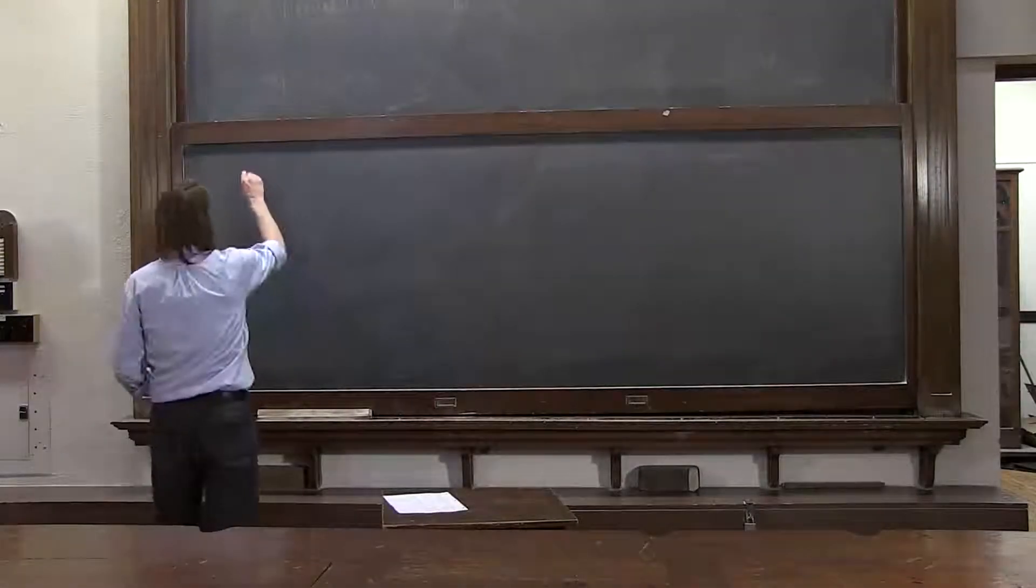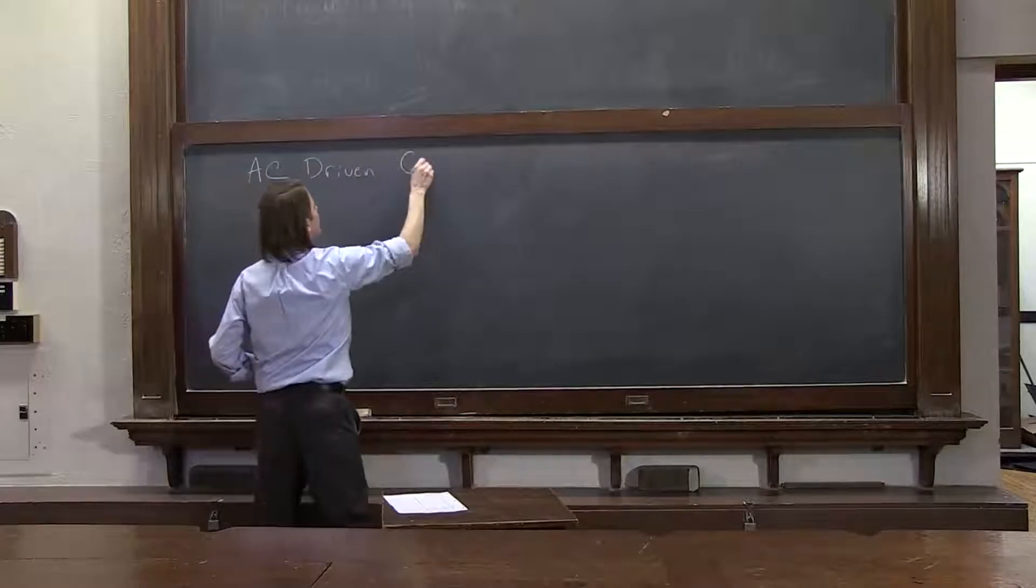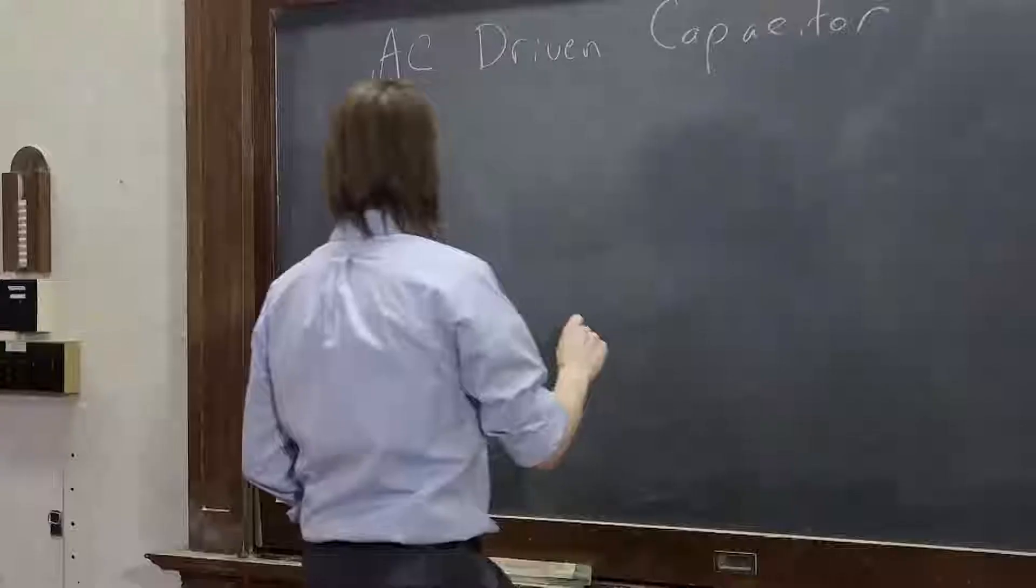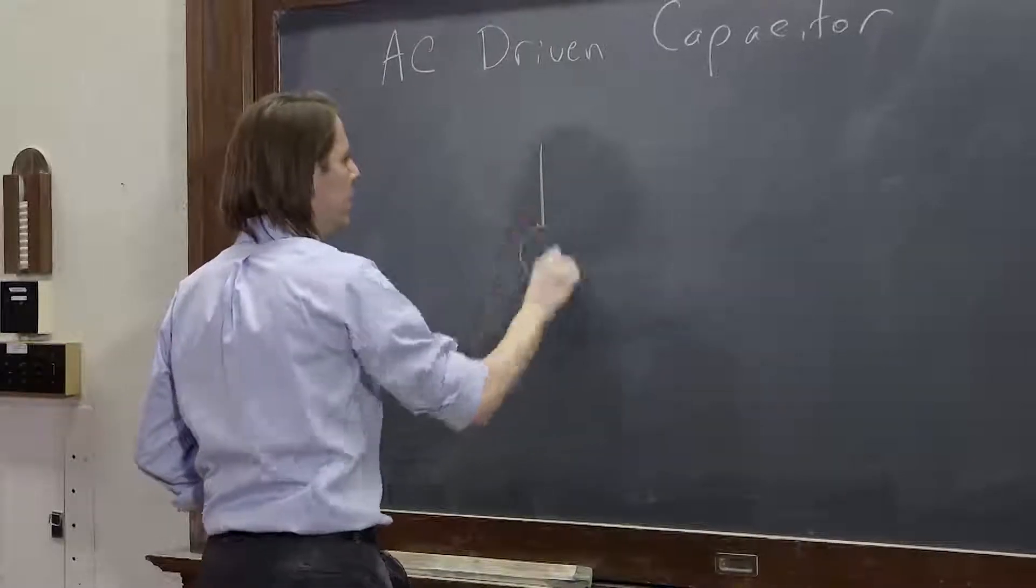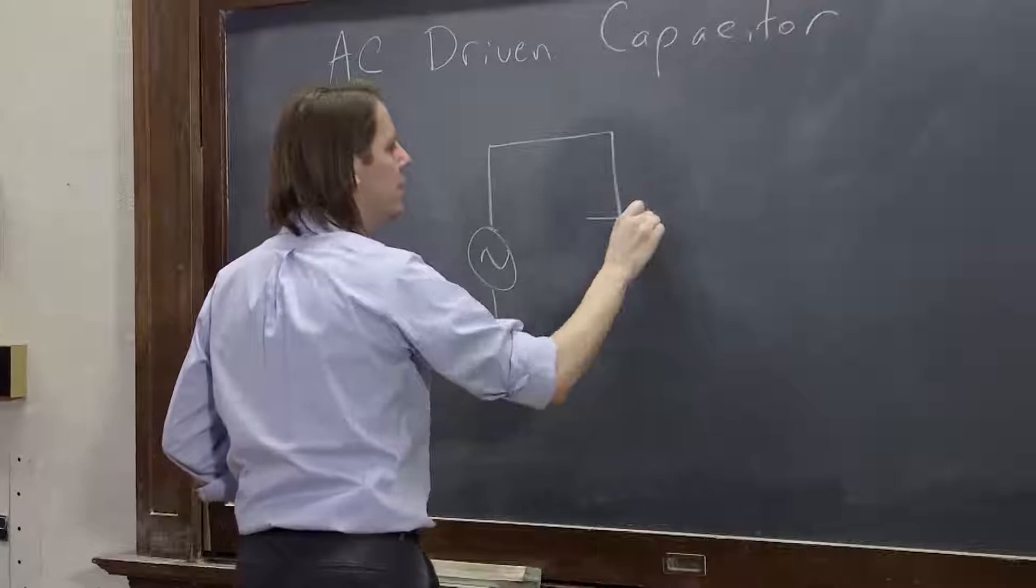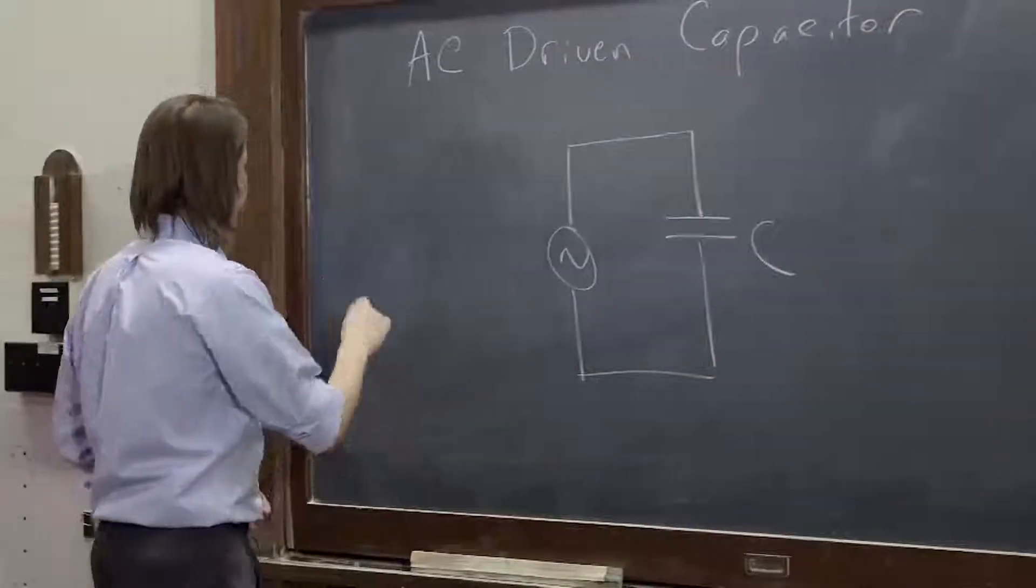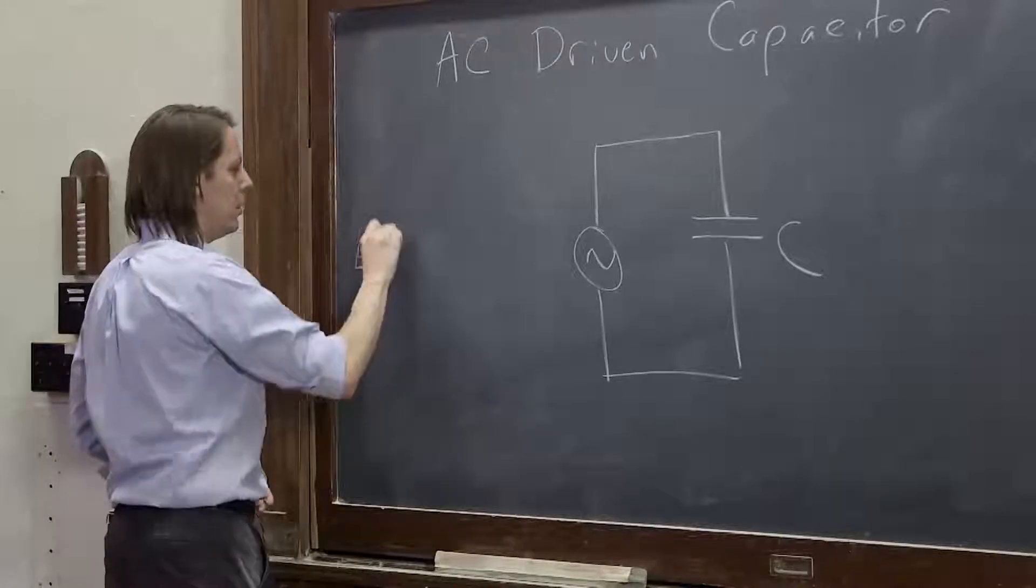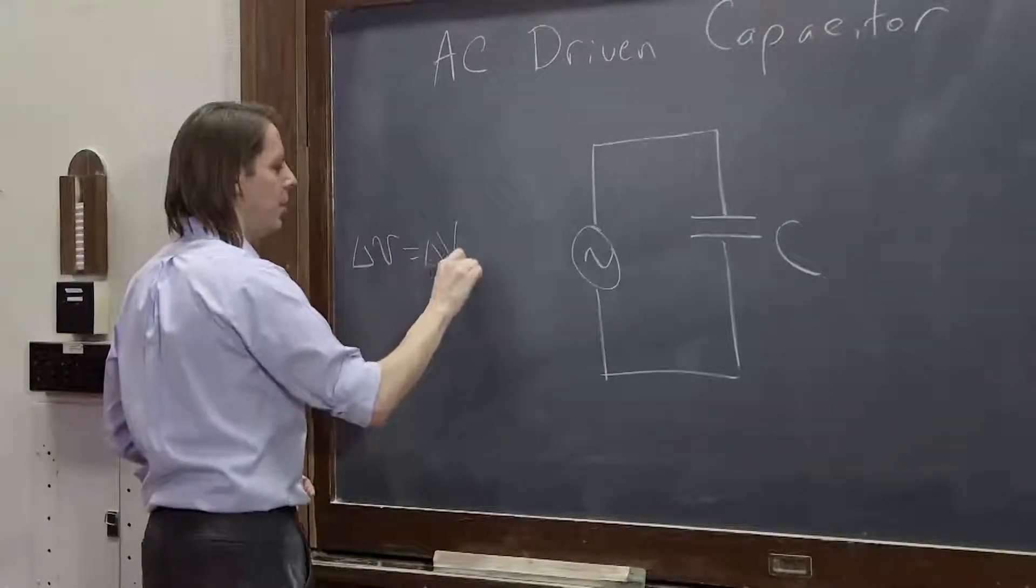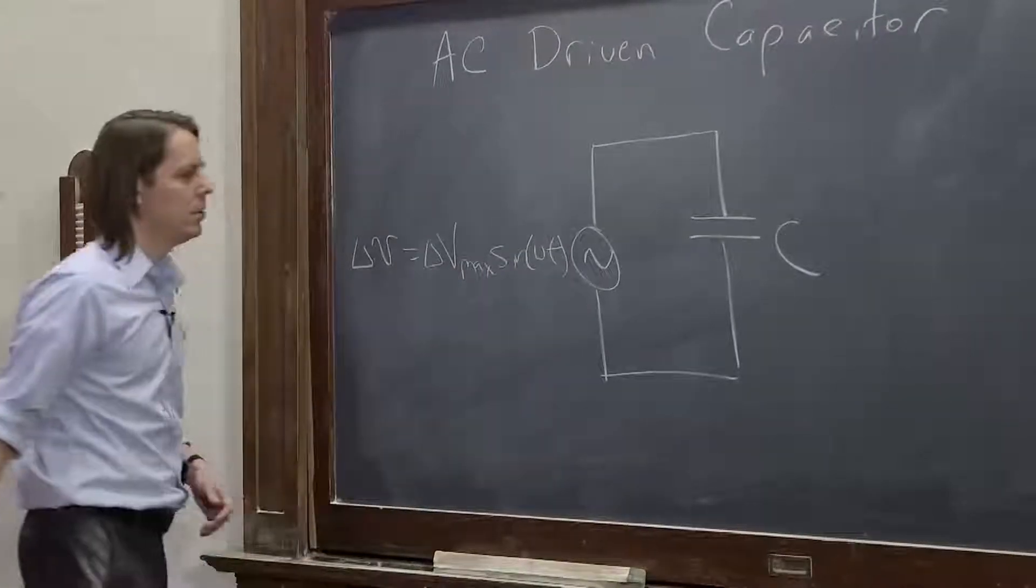Now we will consider an AC-driven capacitor. So again, we have our little AC supply right across the capacitor C, and the little oscillating voltage is delta V max sine omega T.